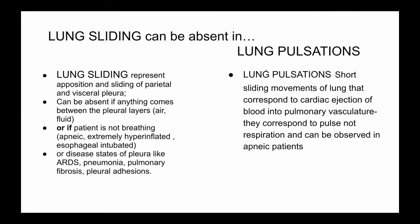Lung pulsations represent the transmitted movement of cardiac ejection to the pleura. This can be useful when somebody is apneic — if there's no lung sliding and you want to know if the pleura are actually opposed, you can look for lung pulsations.